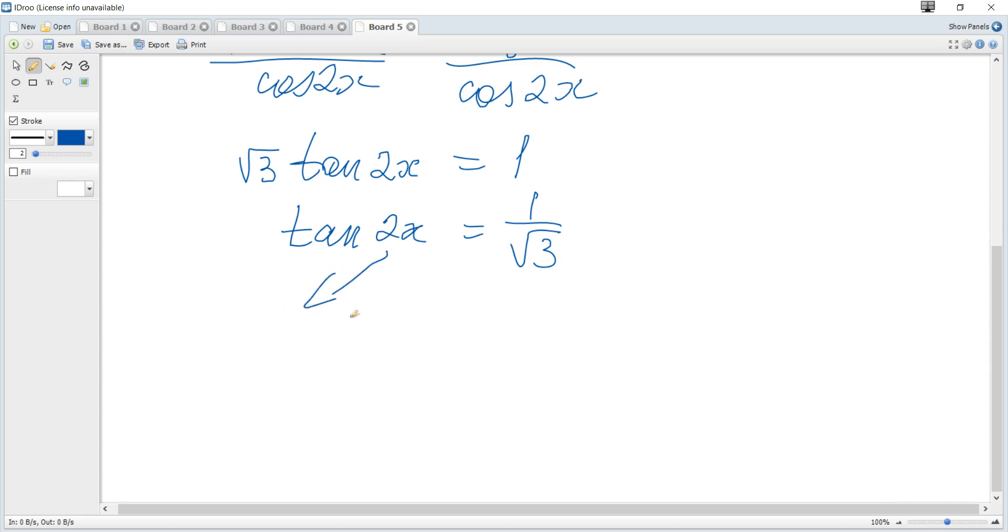For tangent, we use the formula. Write the argument 2x = arctan(1/√3) + πk, where k is any integer. It's the general solution.